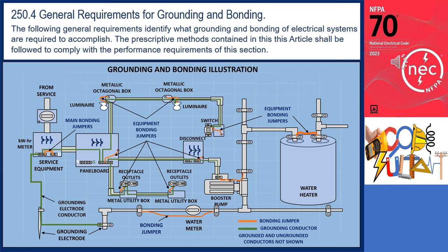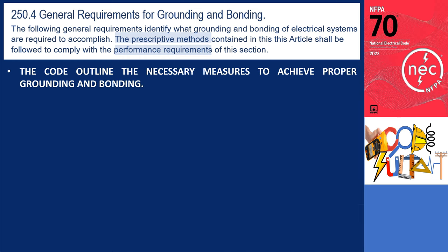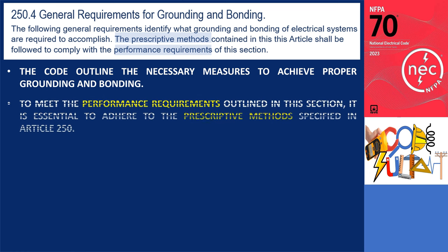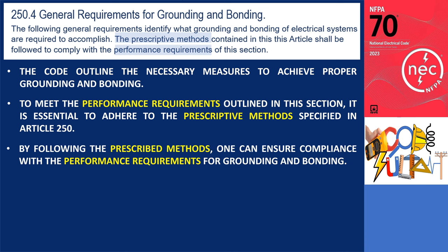Section 250.4, General Requirements for Grounding and Bonding, states that the following general requirements identify what grounding and bonding of electrical systems are required to accomplish. The prescriptive methods contained in this article shall be followed to comply with the performance requirements of this section. The Code establishes general requirements for grounding and bonding in electrical systems, and by following the prescribed methods, one can ensure compliance with these performance requirements.